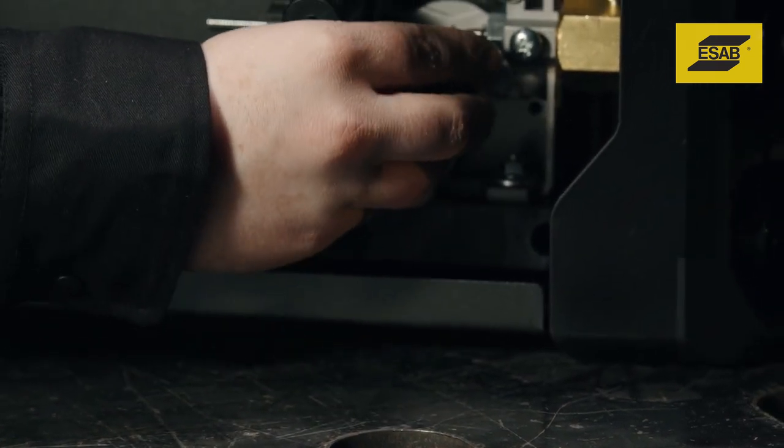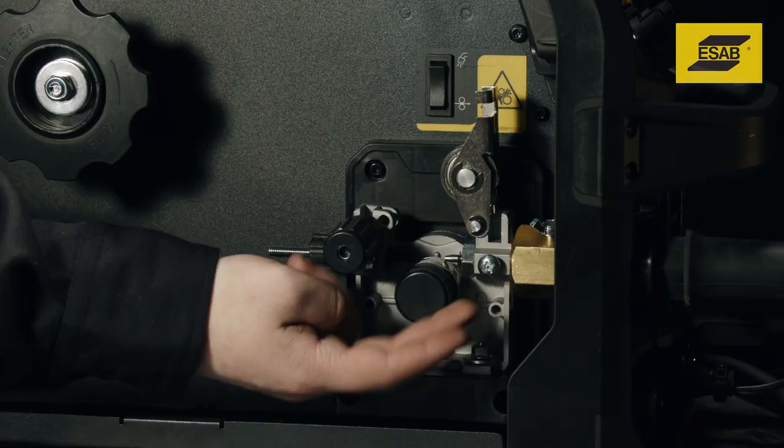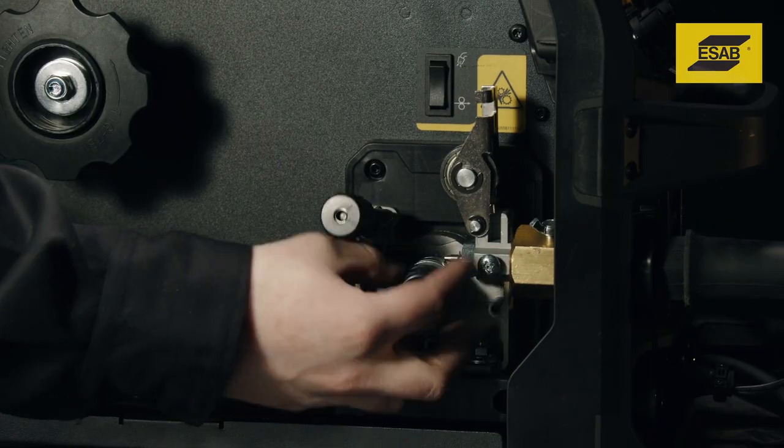To flip or install a new feed roll, release the pressure roller arm and remove the feed roll retention knob.